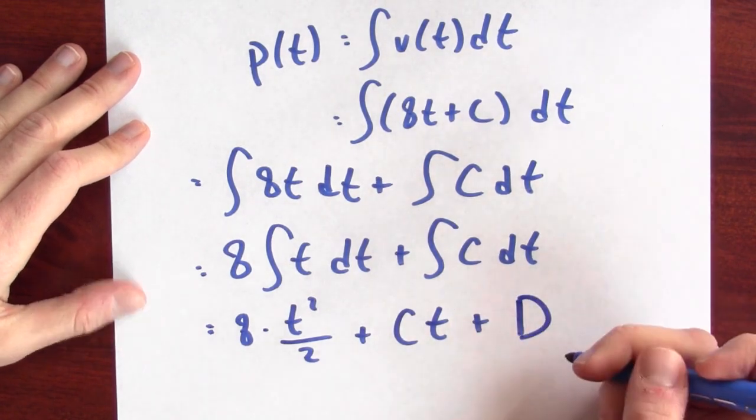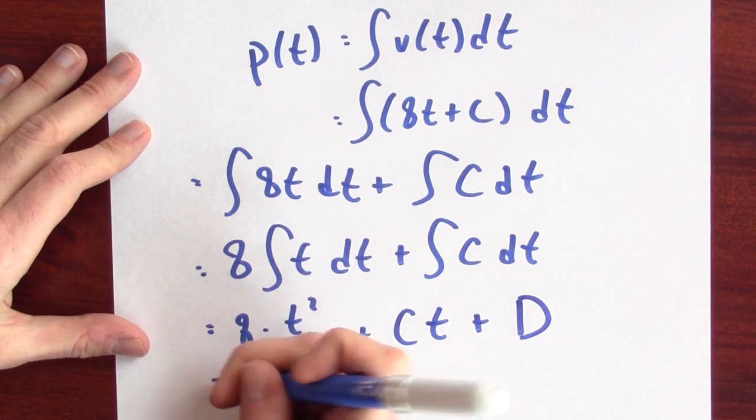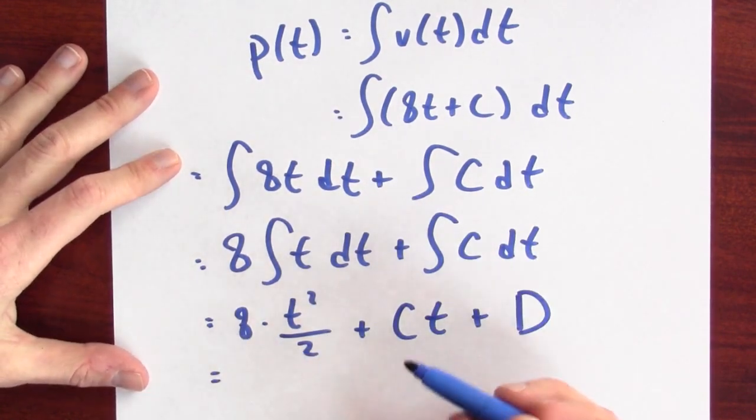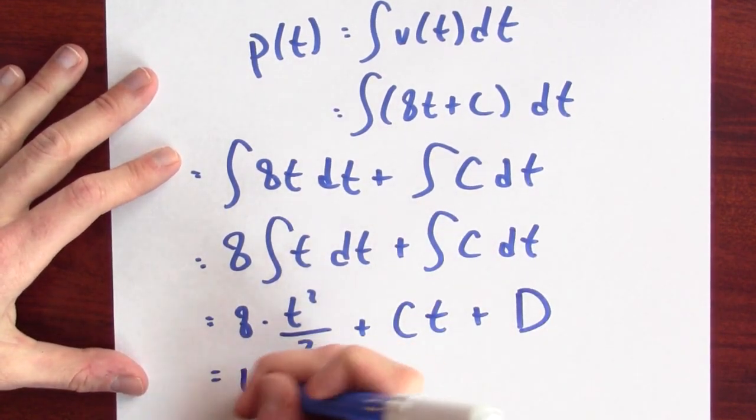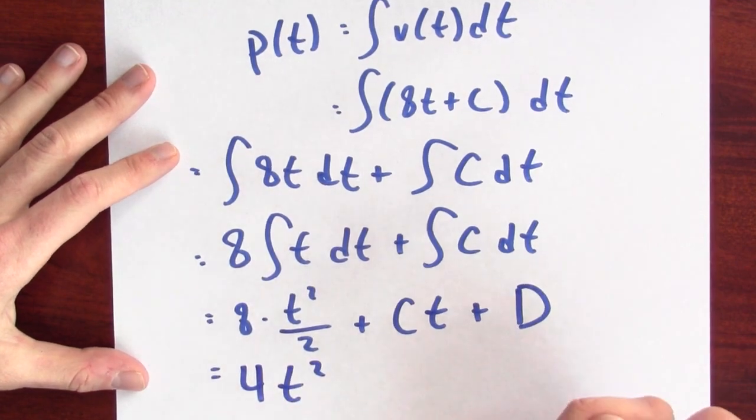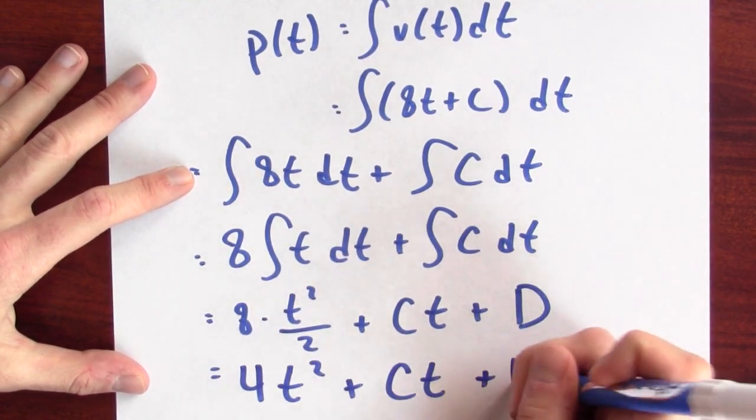I'm going to call that constant big D. So, here's my position. I guess I could write this a little bit more nicely, because the 8 and the dividing by 2 simplify. I could write it as 4t squared plus ct plus d. Well, that's kind of weird. Why are there two constants in my answer?